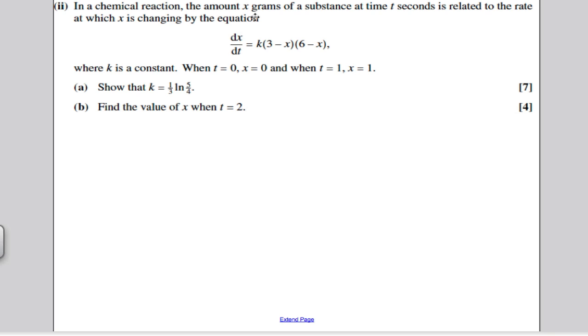On to part 2. It tells us the chemical reaction, the amount x grams in the substance, is changing with respect to time in the following differential equation. And it gives us some boundary conditions. It asks us to show that k is 1 third ln(5/4), this constant k. How I'm going to solve this is, as usual, separating variables and integrate. I'm going to bring everything with x onto one side. So divide both sides by (3-x)(6-x).